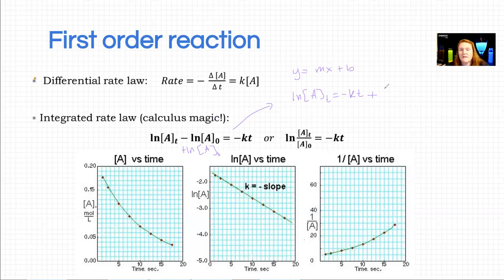So that has the format y equals mx plus b, which means on the graph y is concentration across all possible times. m is negative k again, which is why that's a decrease. And x is time.